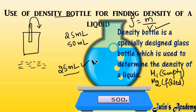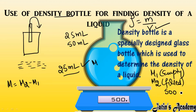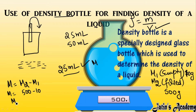To measure the mass of the liquid, subtract both values: m2 minus m1. For example, if the filled bottle mass is 500 grams and the empty bottle mass is 10 grams, then the mass of the liquid is 500 minus 10, which equals 490 grams. This way we calculate both mass and volume, and since the density bottle has a fixed volume, we can easily use it to measure the density of any liquid.